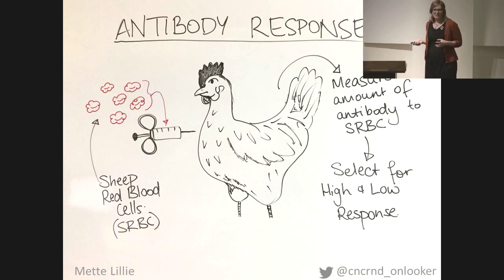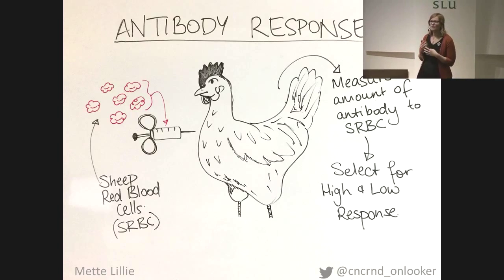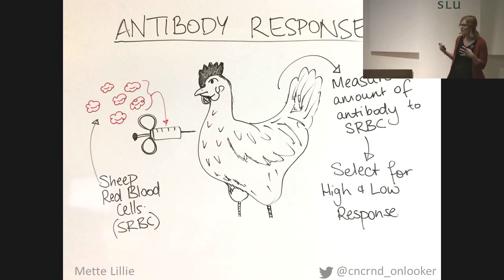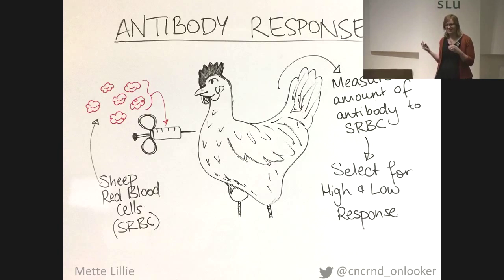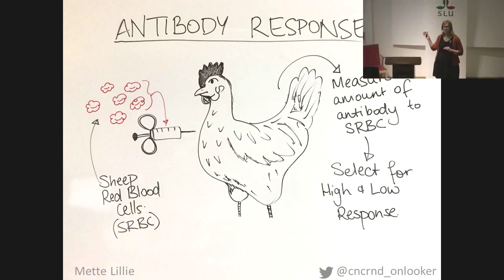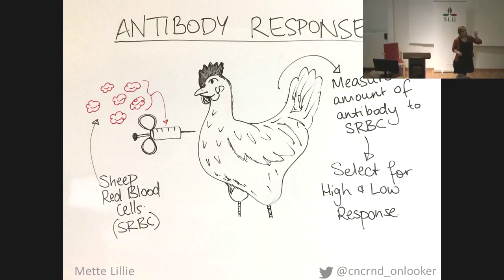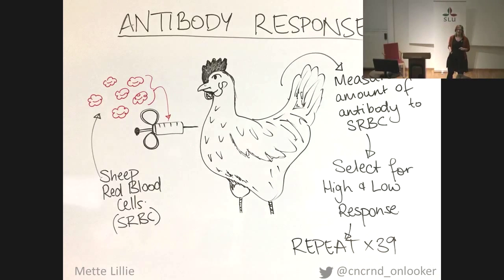We're using sheep blood cells — these lovely little blood cells here. And this is sort of a challenge: it's a foreign antigen, not necessarily a pathogen, but a foreign body that the chicken will mount an immune response for. We will inject this antigen, measure the immune response, and start selectively breeding the ones with the good immune response together and the ones with the low response together. And we do this 39 times — so we have 39 generations of selective breeding for high and low antibody response.